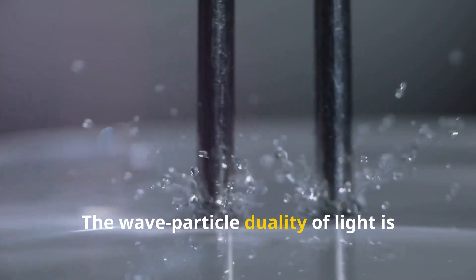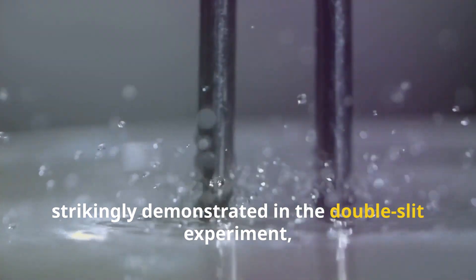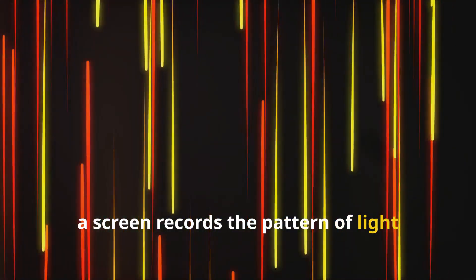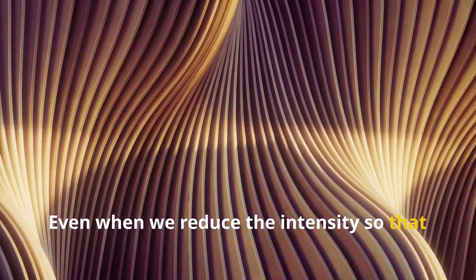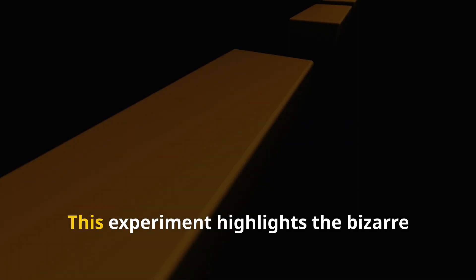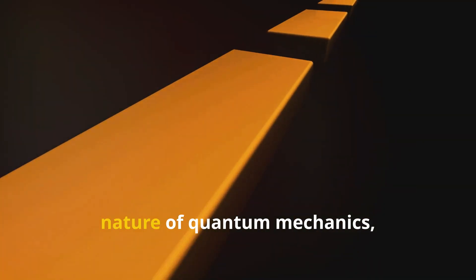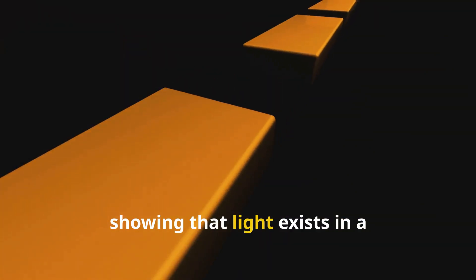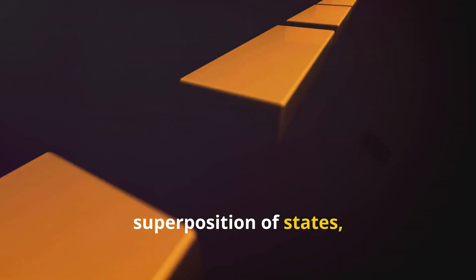The wave-particle duality of light is strikingly demonstrated in the double-slit experiment, a cornerstone of quantum mechanics. Imagine shining a beam of light at a barrier with two narrow slits. Behind the barrier, a screen records the pattern of light that passes through. Even when we reduce the intensity so that only one photon is emitted at a time, the interference pattern still emerges. This experiment highlights the bizarre nature of quantum mechanics, showing that light exists in a superposition of states, exhibiting both wave-like and particle-like behavior.